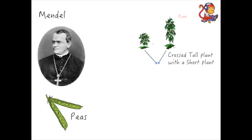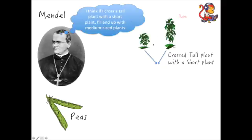He bred these two together, and when he did that he predicted this: he predicted that if he crossed a tall plant with a short plant he'd end up with a medium-sized plant. He thought that there would be offspring that had a height somewhere in the middle of the two.